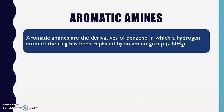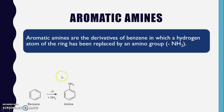What is the meaning of aromatic amines? Aromatic amines are the derivatives of benzene in which a hydrogen atom of the ring has been replaced by the amino group, that is NH2. We have studied the meaning of phenol, in which the hydrogen atom of benzene is replaced by the hydroxyl group, whereas in aromatic amines, hydrogen is replaced by the amino group. For example, this is the structure of benzene and this is the structure of aniline, formed by replacing one hydrogen atom of benzene with the amino functional group NH2. This simple example of an aromatic amine is known as aniline.